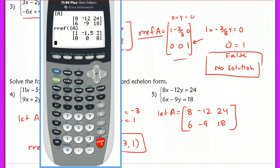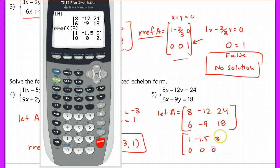Hit enter on RREF, second matrix A, and hit enter. And I get negative 1.5, 3, and then 0, 0, 0.